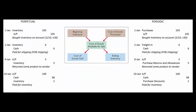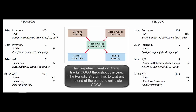So in concept, whether we're using the perpetual or the periodic inventory system, we're taking beginning inventory and cost of goods purchased, and that gives us total goods available for sale. What got sold is cost of goods sold, and what's left is ending inventory. The difference is that the perpetual inventory system tracks cost of goods sold all throughout the year, whereas the periodic inventory system waits to the end of the period.